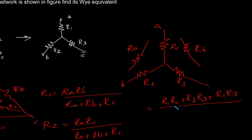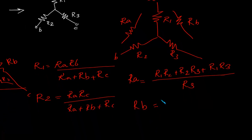The denominator will be the resistance opposite to it. That means if we have to find out Ra, it will be R1·R2 plus R2·R3 plus R1·R3, divided by the opposite resistance R3. Now if we have to find out Rb, it will be the same numerator — that means the product of resistances taken two at a time.